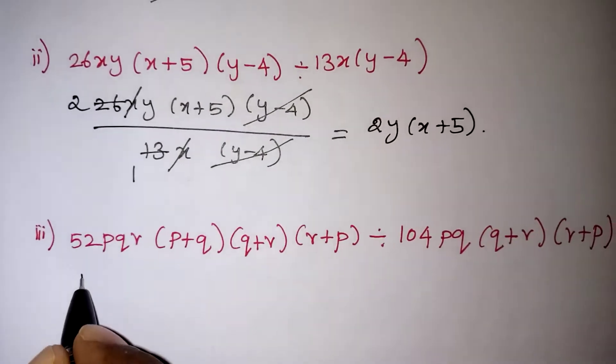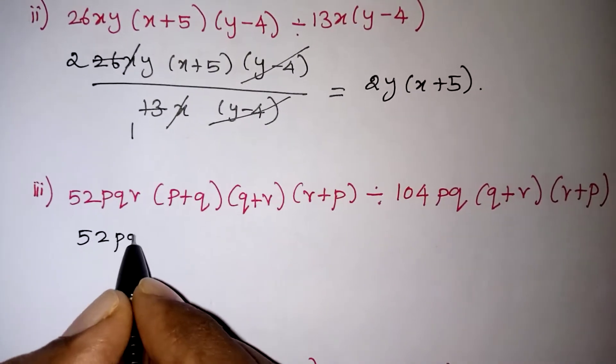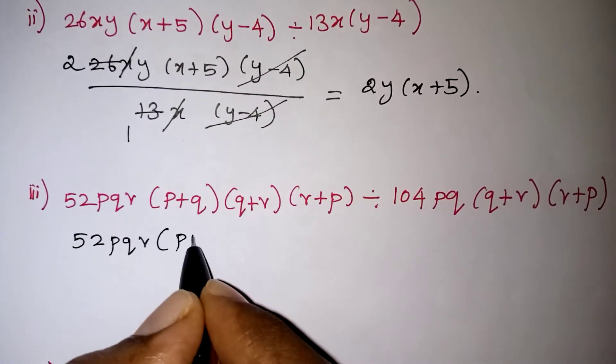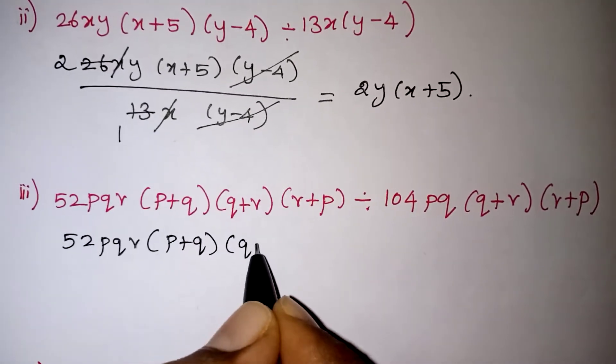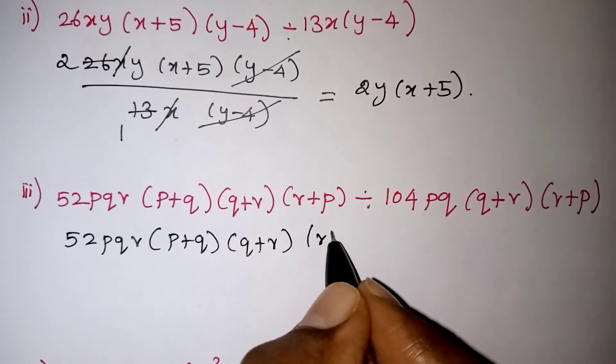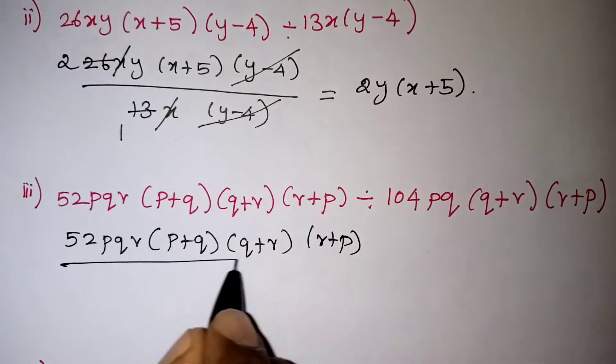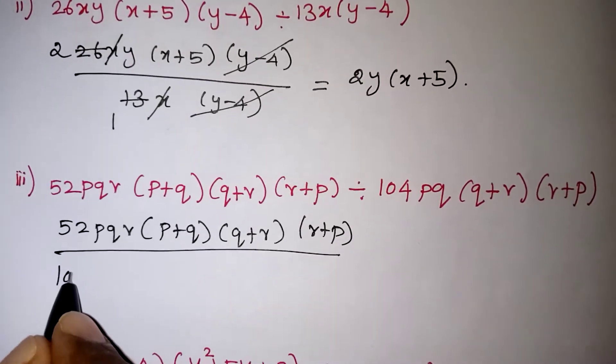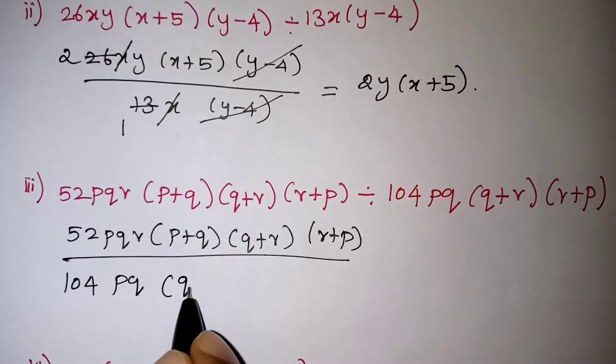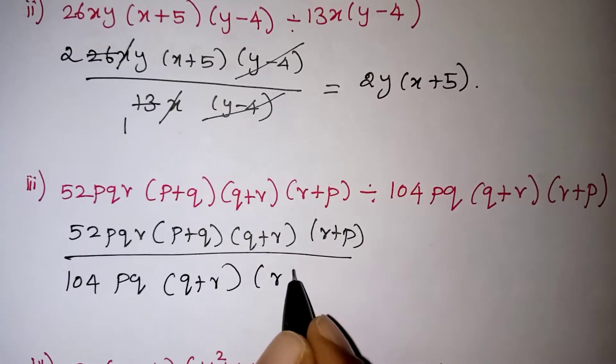Again the same way, the first number should be taken as a numerator: (p + q)(q + r)(r + p) and this next term should be taken as a denominator, that is 104pq(q + r)(r + p).